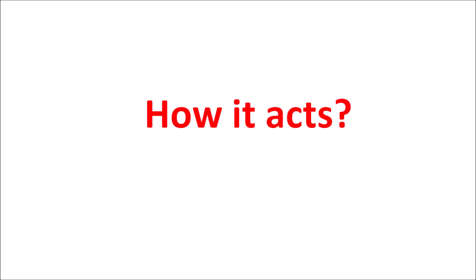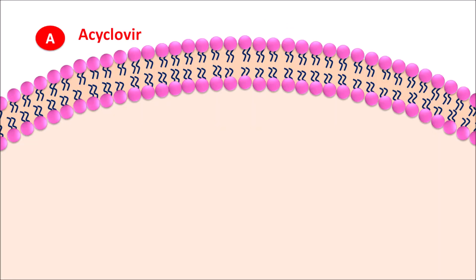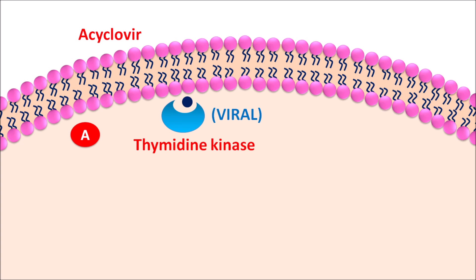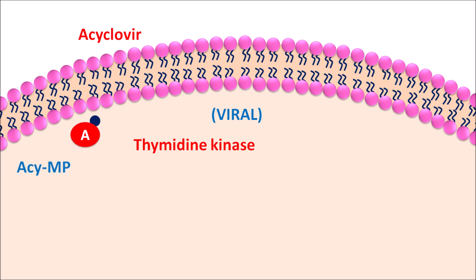Let us explore the exact mechanism of action. Acyclovir can enter into the infected cells, but initially it is not in the active form — it should be phosphorylated so that it can be incorporated into the DNA. To be incorporated into the DNA, it should be converted into the triphosphate form. The first enzyme required for phosphorylation of acyclovir is thymidine kinase, which is present in the viral cell. Viral thymidine kinase interacts with acyclovir and converts it into acyclovir monophosphate, which is still not the active form.